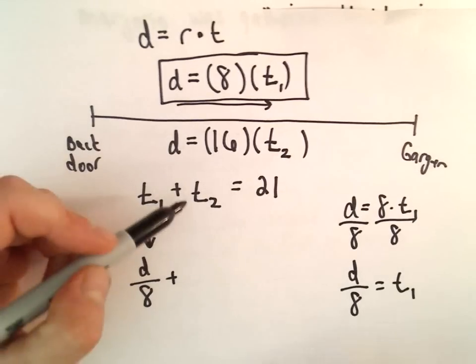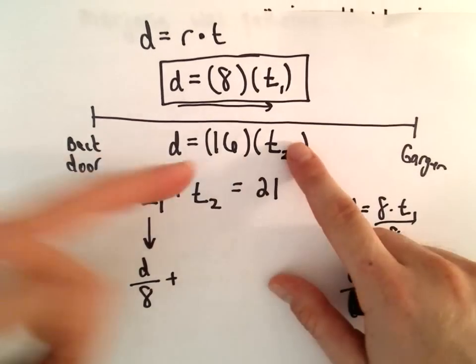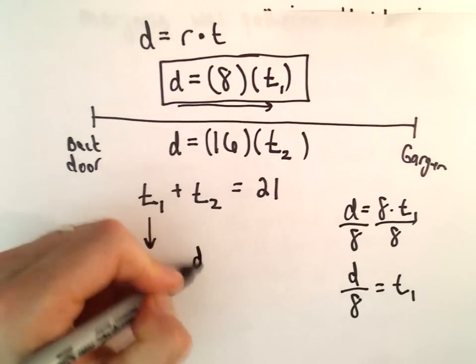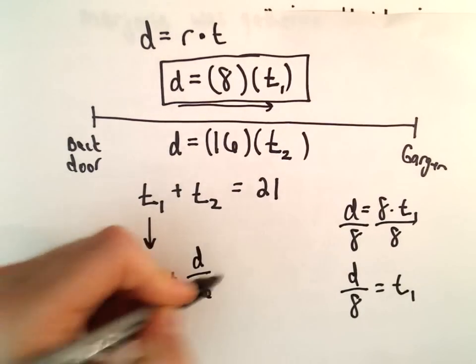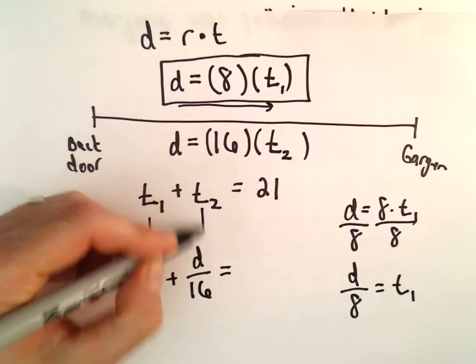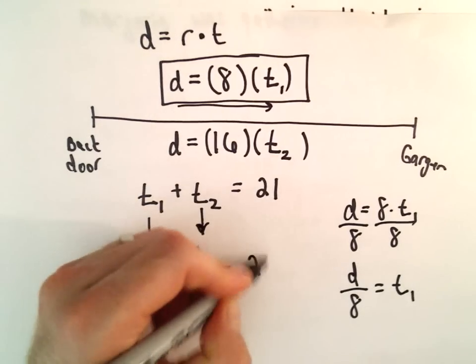We can do the same thing for T2. We can just divide both sides by 16. So we'll get D over 16 equals T2. And again, that equals 21.